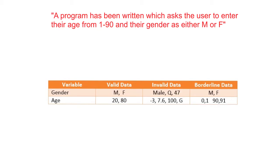Invalid data for gender would be the word 'male', the letter Q, or the number 47 — each of those should generate an error message as we are only accepting the letter M or the letter F. Invalid data for age includes negative figures, a floating point number, a number higher than the maximum we were allowing, and indeed a letter. Any of these should generate an error message.